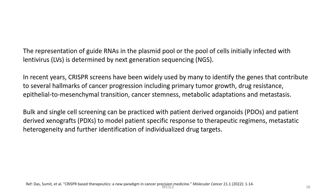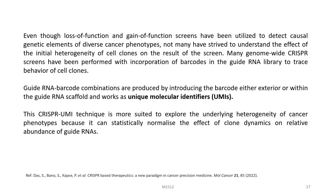In recent years CRISPR screens have been widely used to identify genes that contribute to several hallmarks of cancer progression, including primary tumor growth, drug resistance, epithelial to mesenchymal transition, cancer stemness, metabolic adaptation, and metastasis. Bulk and single-cell screening can be practiced with patient-derived organoids and patient-derived xenografts to model patient-specific responses to therapeutic regimens, metastatic heterogeneity, and further identification of individualized drug targets.